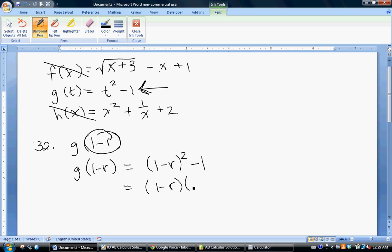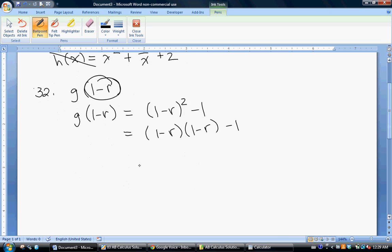Remember, 1 minus R, you don't distribute the two. You rewrite the whole thing. And so we'd end up with 1 minus R, minus R, plus R squared. And then this negative one just carries down.